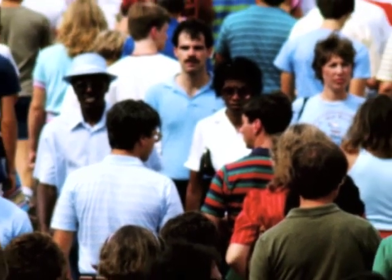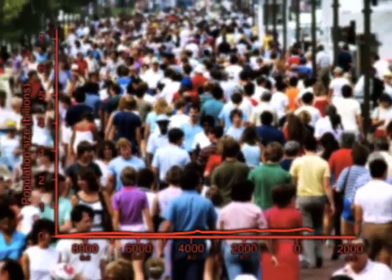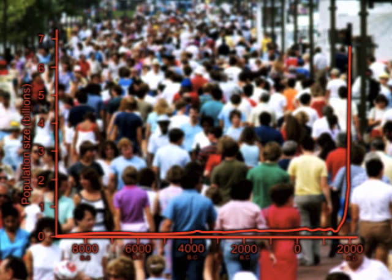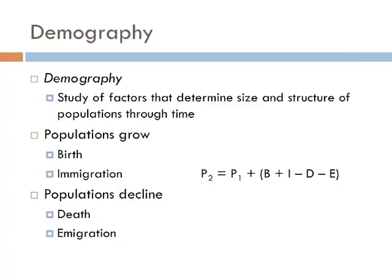Population ecology helps us understand human population growth and where we might be headed. Demography is the study of factors that determine the population size and structure through time. It looks at how populations grow and decline. Populations increase through births and immigrations, whereas populations decline by deaths and emigration. A new population is a function of the old population, plus the amount of births and deaths, and how much immigration and emigration has occurred.